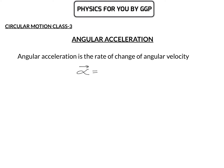Angular acceleration alpha vector is the change in angular velocity — final angular velocity minus initial angular velocity — divided by time. We will use this equation when angular acceleration is constant.